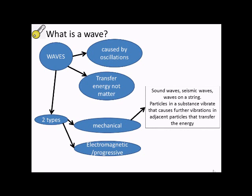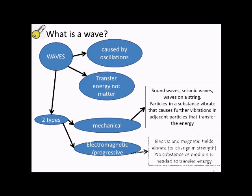Mechanical waves are in a substance, so for example sound waves or waves along a string. They vibrate and cause the vibrations to be passed along. Whereas an electromagnetic or progressive wave is a wave that distributes energy from a point, and you don't necessarily need a medium to travel.